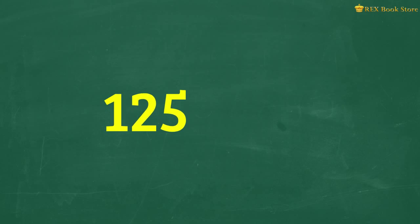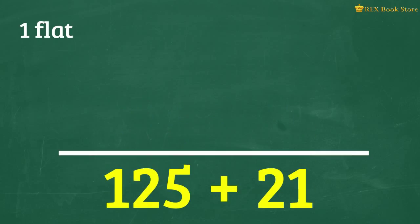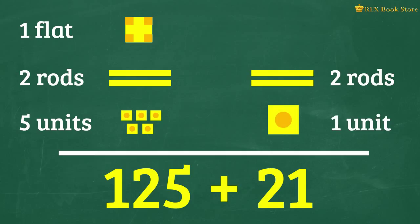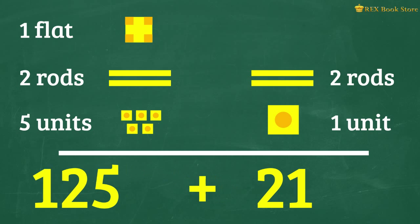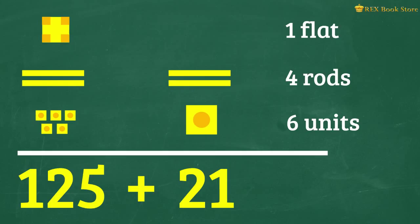Let's add 125 and 21 using a base 10 model. We'll model 125 with 1 flat, 2 rods and 5 units. And we'll model 21 with 2 rods and 1 unit. Since addition means to put together, we'll combine all these to get the total. We now have 1 flat, 4 rods and 6 units. So 125 plus 21 is 146.